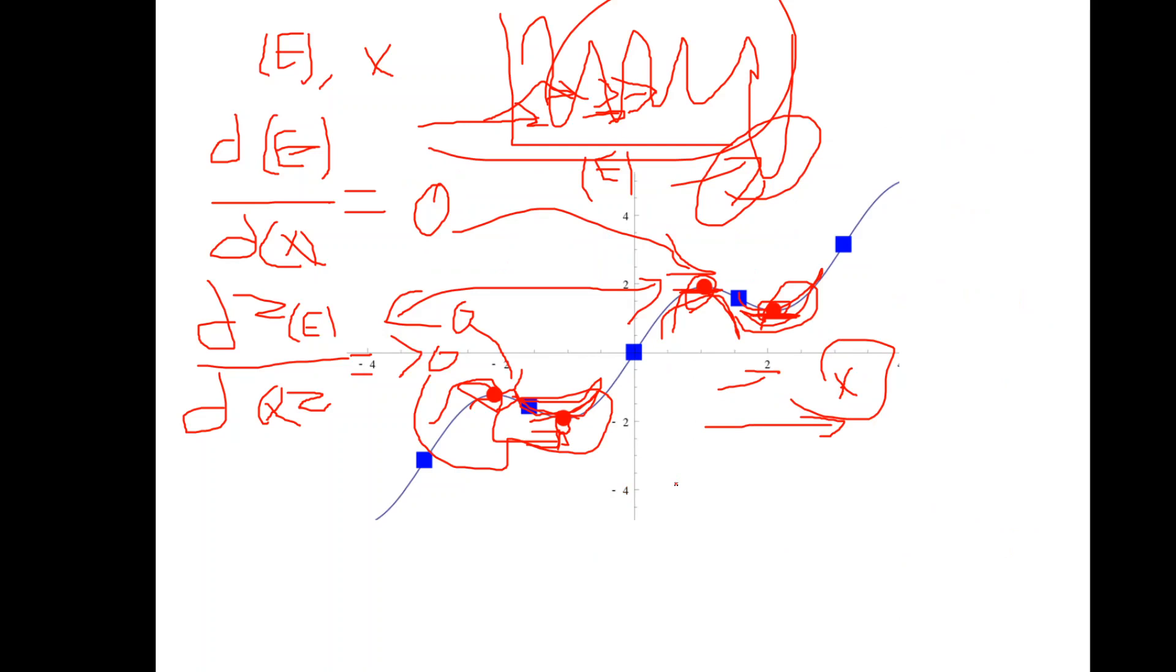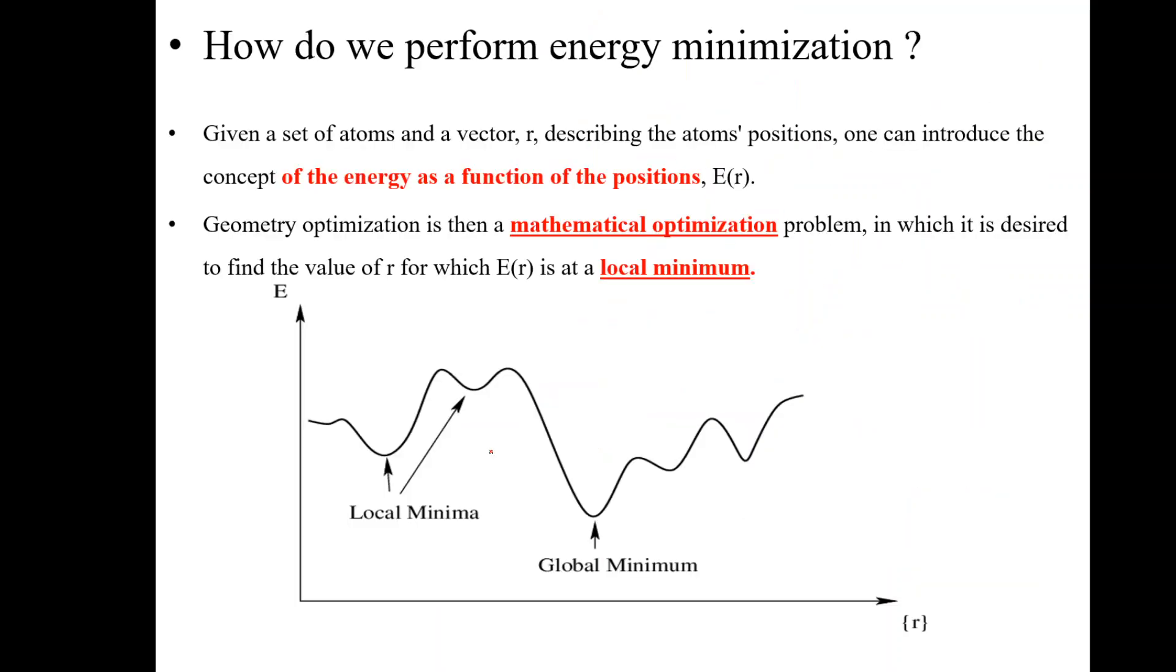What I was explaining was in one dimension, but in three dimensions this x could be x, y, and z. The derivative of the energy gradient—same concepts. Given a set of atoms and a vector r describing the atomic positions, we can introduce the concept of energy as a function of position.